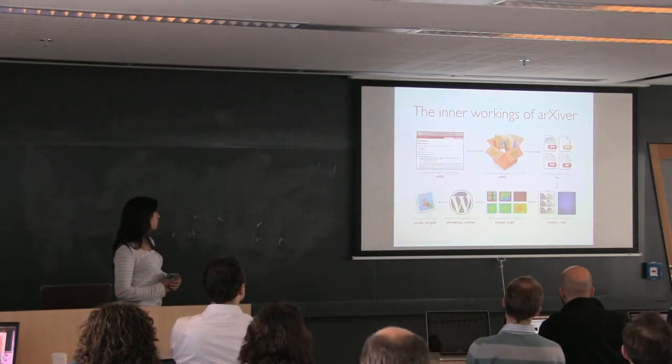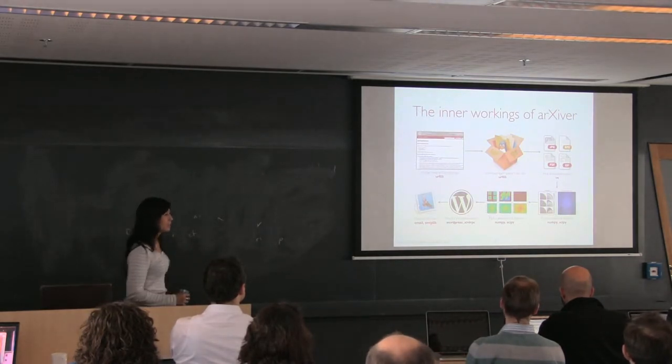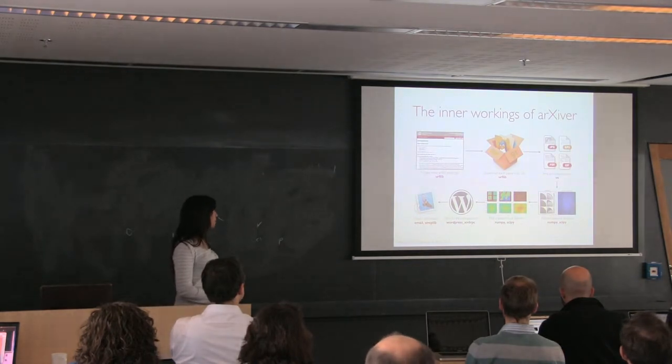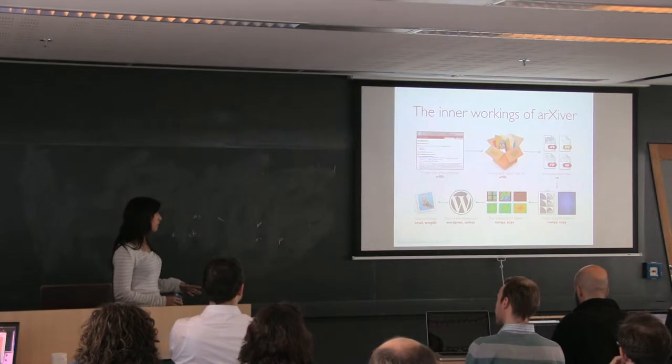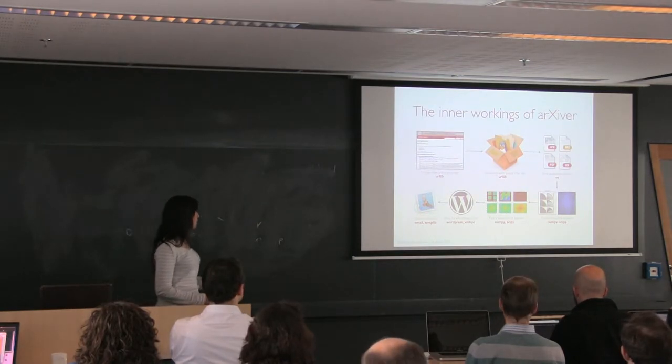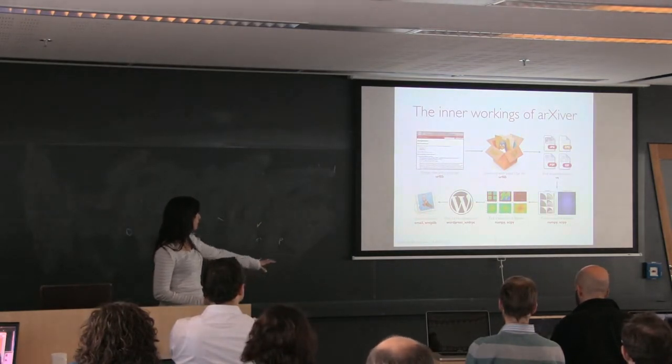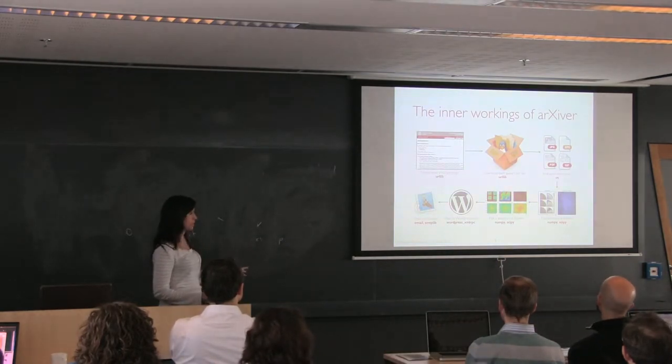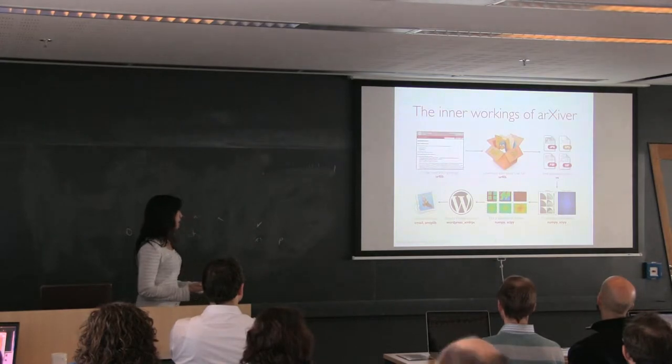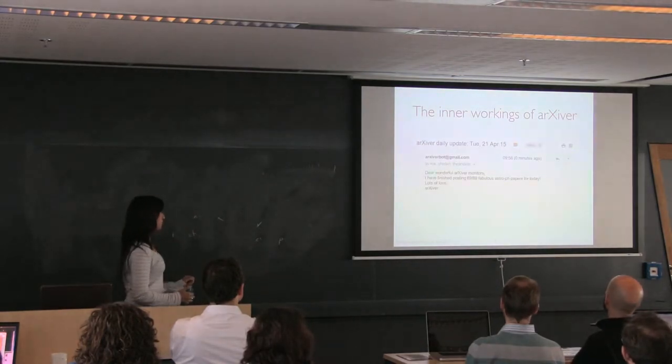We were pretty proud that we use Fourier transforms, so we Fourier transform each image to pick a selection of figures that represents the paper. We use this library WordPress XML RPC to post to WordPress from Python, and we added an email notification to make sure that it's run okay.